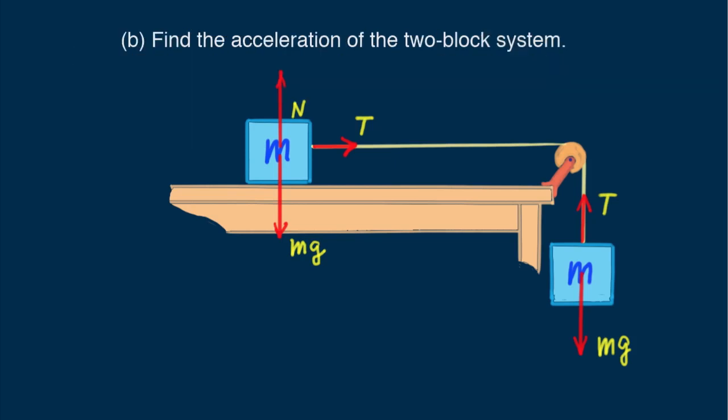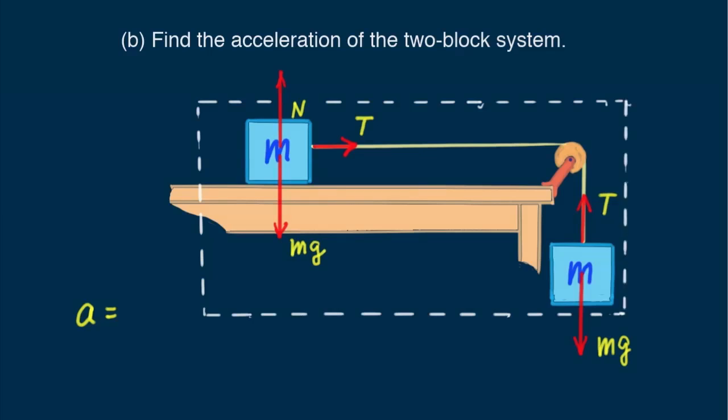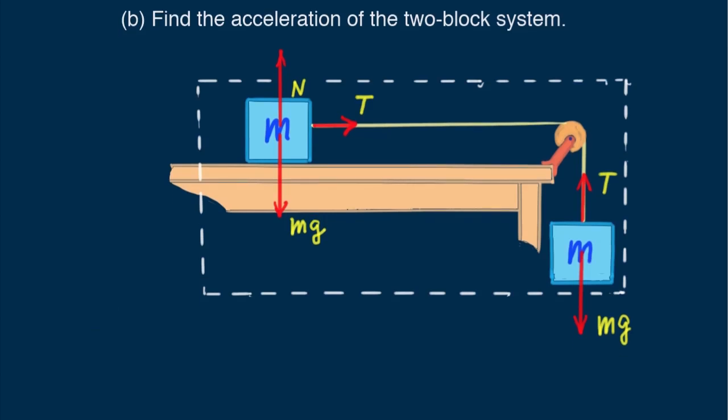Part B: Find the acceleration of the two-block system. We begin with a equals, to focus on what we're asked to find. Since we're looking for the acceleration of the two-block system, let's define the system with this white border. Note that the pair of t vectors are inside the border. Because of the pulley, they don't have the same direction, but they do have the same magnitude. These are effectively internal forces which, in accord with Newton's third law, always cancel. Internal forces have no effect on the motion of the system. The equal and opposite forces mg and n on the sliding block also cancel. So the only external force that acts to accelerate the two-block system is mg acting on the hanging block.